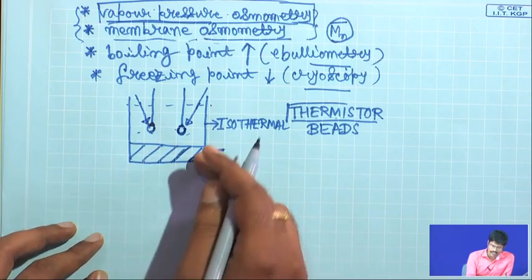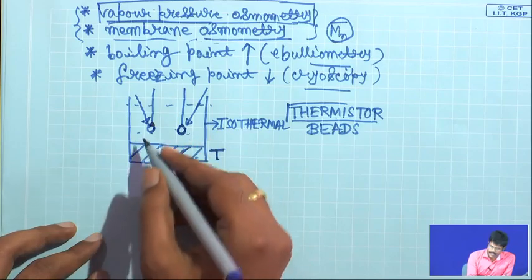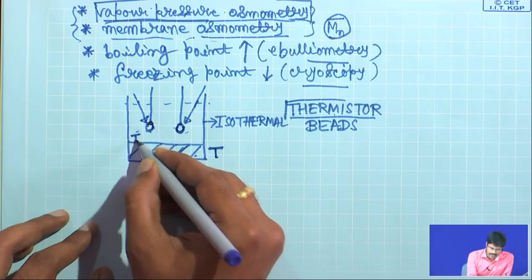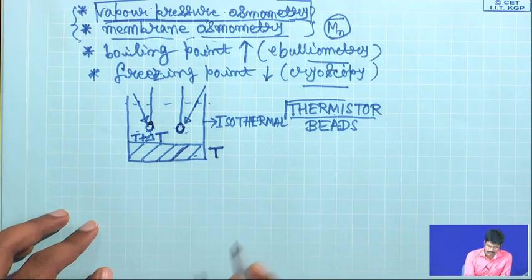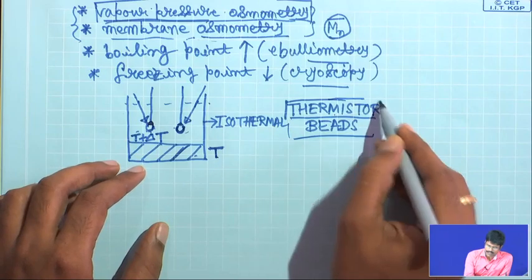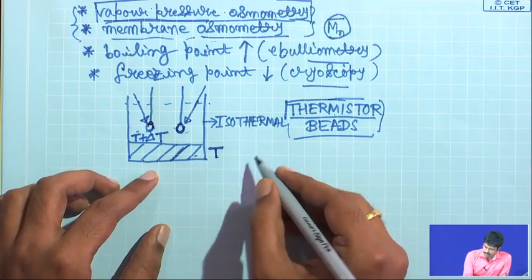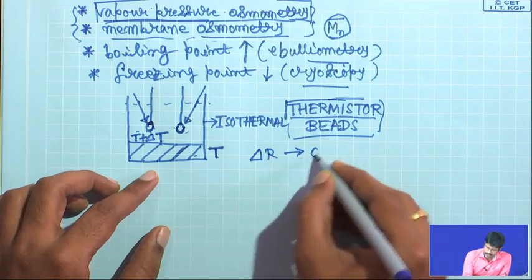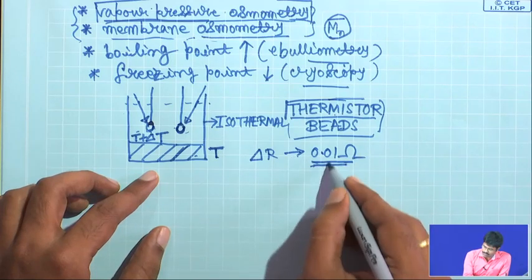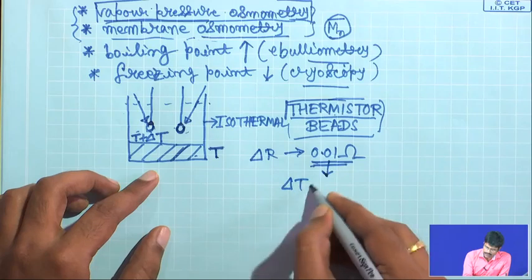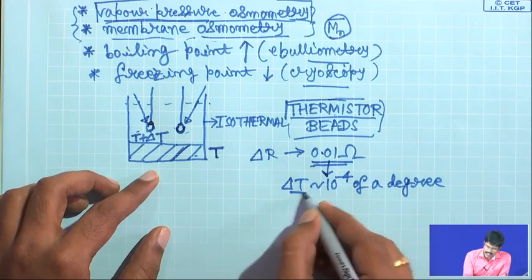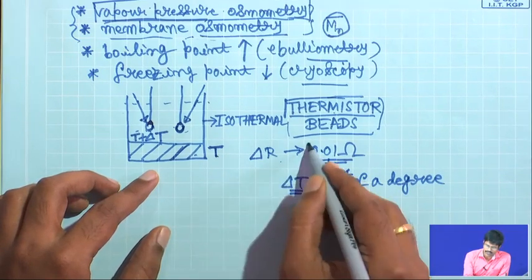If the temperature is T for the solvent in equilibrium with its vapor, what is happening is that this solution drop will have an increase in temperature — let us say the temperature becomes T plus delta T. You are going to measure this temperature change. These thermistor beads are quite sensitive: a resistance change of 0.01 ohm can be measured very easily, and this can correspond to a delta T of 10 to the power minus 4 of a degree.